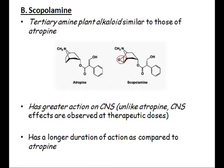The second antimuscarinic agent is scopolamine. Like atropine, scopolamine is a naturally occurring tertiary amine plant alkaloid. It has a structurally similar form to atropine, except that it contains an oxygenated part.